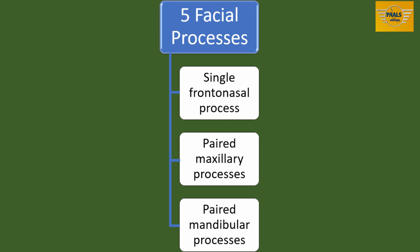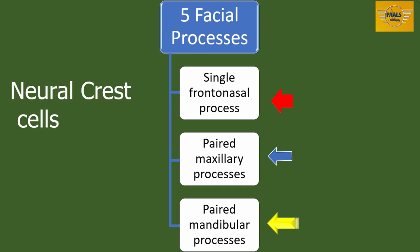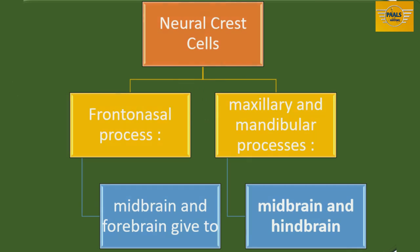These processes are: one, the single frontonasal process; two, the paired maxillary processes; and three, the paired mandibular processes. These five processes are mainly of mesenchymal cells derived from neural crest cells. Neural crest cells from the developing midbrain and forebrain give rise to the frontonasal process, while neural crest cells from both midbrain and hindbrain contribute to the formation of the maxillary and mandibular processes.